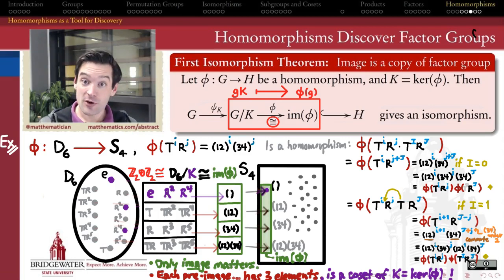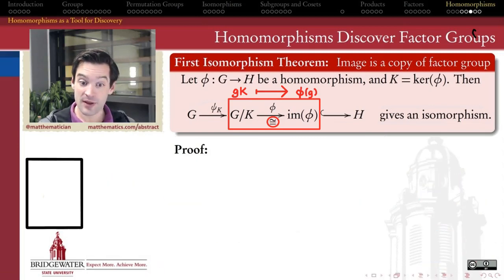Remember, the first isomorphism theorem is cool because it does two things for us. All you have to do is supply a homomorphism from G to H, and this theorem gives us a normal subgroup of G in the form of the kernel of that homomorphism, and for free it also tells you exactly what the factor group of G mod that kernel looks like. It's isomorphic to the image of that homomorphism. Let's figure out if we can prove the first isomorphism theorem in its fullness.